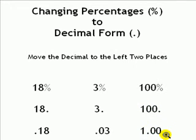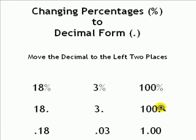To reverse it and go from decimal to percentages, go to the right two decimal places — 1, 2 — and then change the decimal to a percentage symbol.